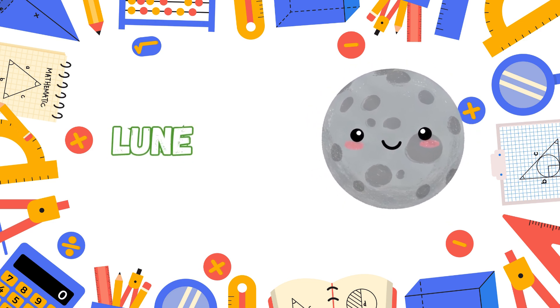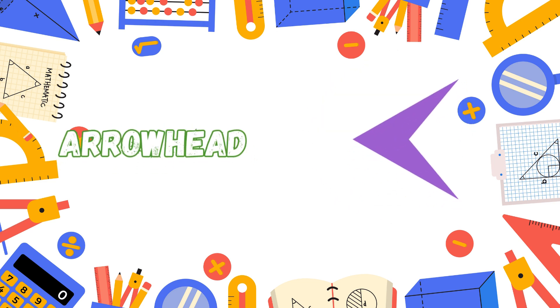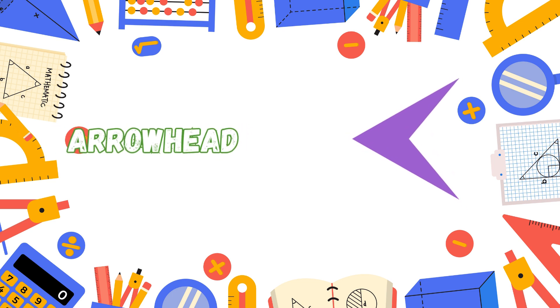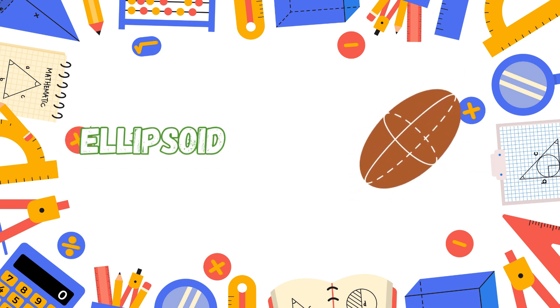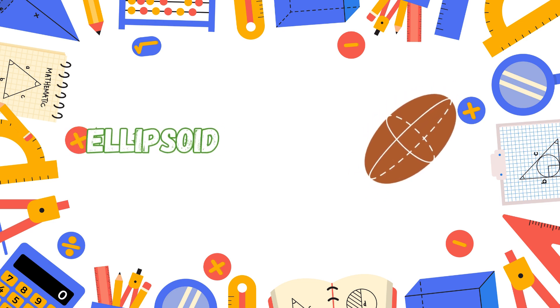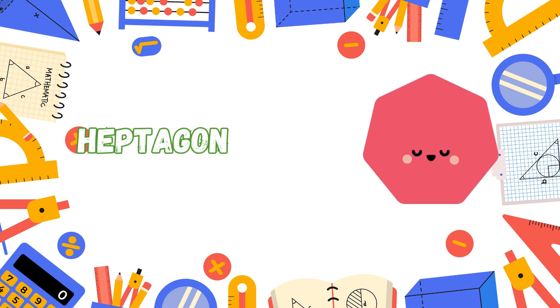Lune is a slice, curved and round. It's a piece of a circle found. Arrowhead is sharp and sleek. It points the way that we should seek. Ellipsoid is stretched in 3D space, a flying shape, full of grace. Heptagon has seven sides. Count them all, it never hides.